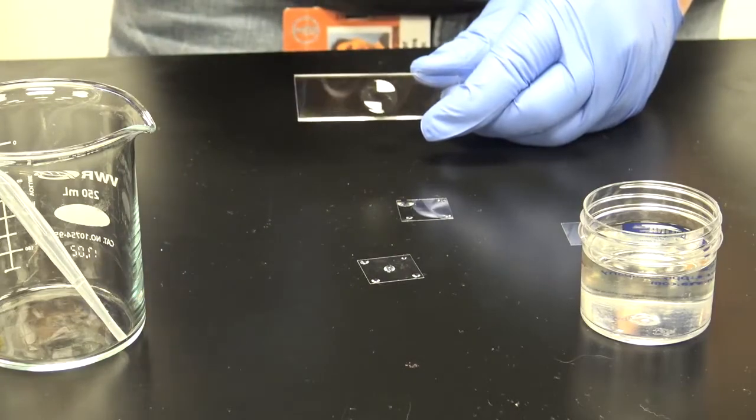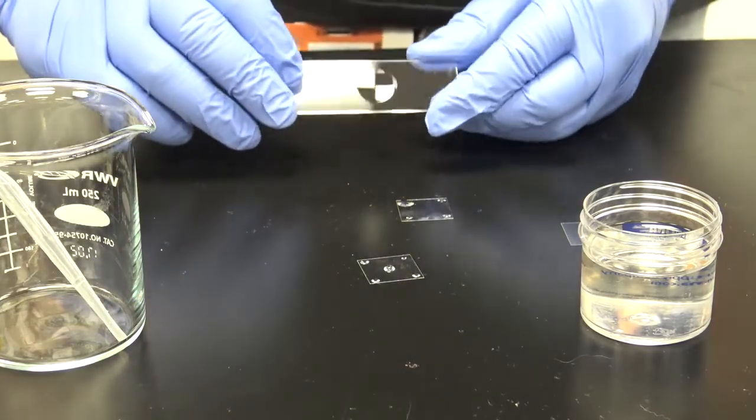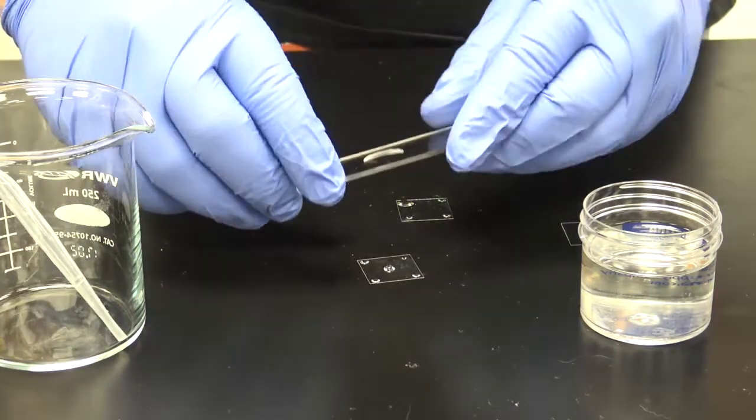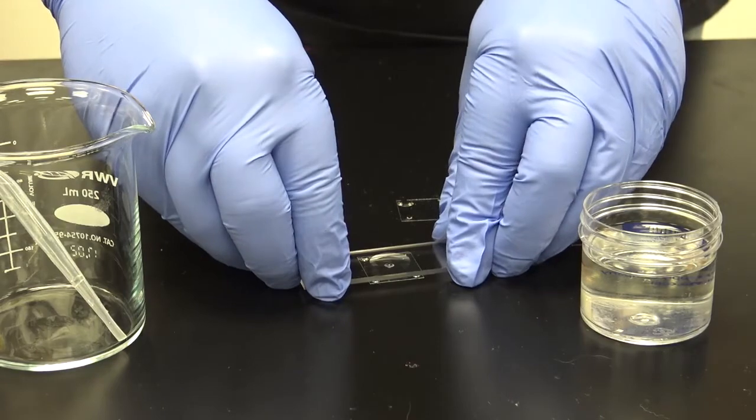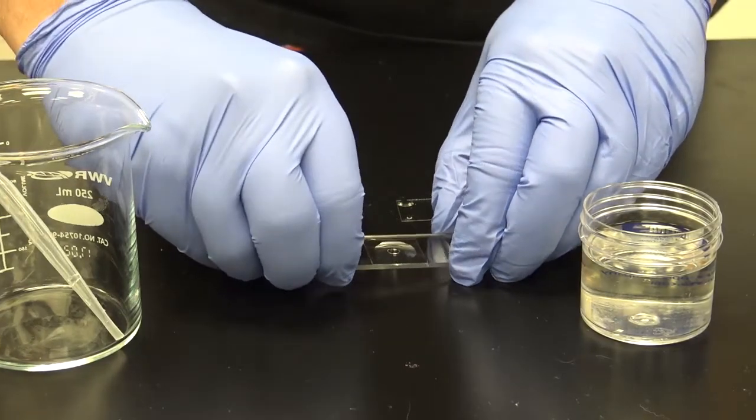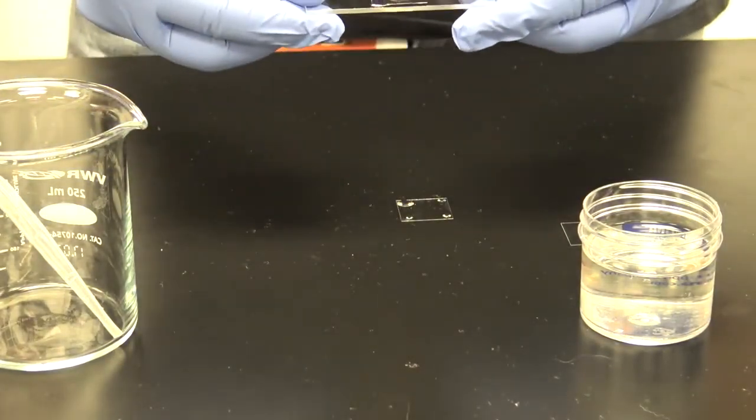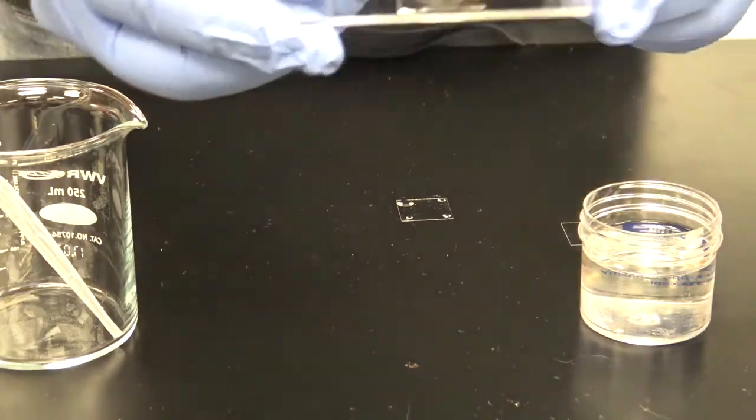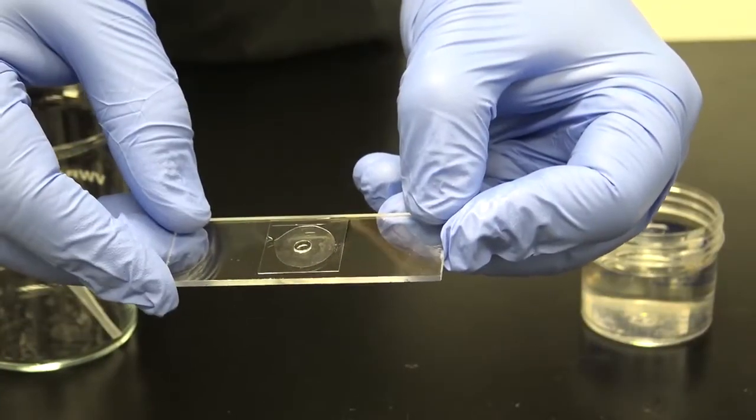You want to make sure that it does that on the top part of the slide because you're going to be flipping that over. Very carefully, you're going to make contact with the oil that's on the cover slip, and then you're going to flip the slide over. As you'll notice, your droplet is now hanging in the center of your concavity.